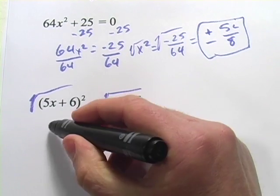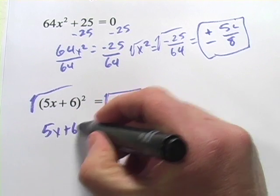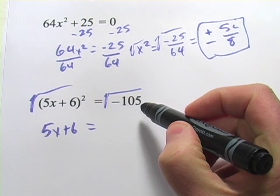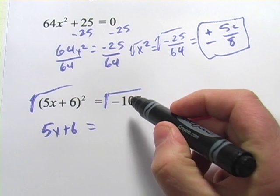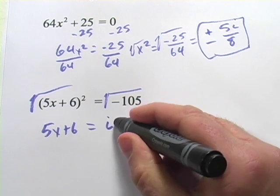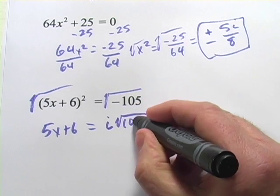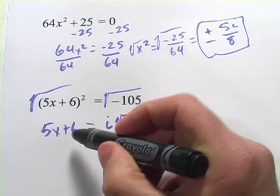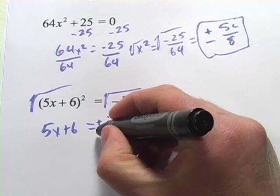We're going to get 5x plus 6 over here. And I'm trying to think if there's anything to factor there. I don't think so. So I'm just going to pull out the negative 1 and call this i times the square root of 105. And then, forgot, plus or minus.